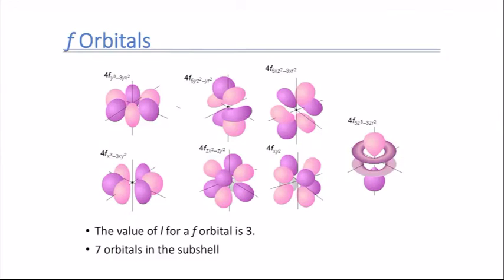F orbitals have L=3, which means there are seven different orbitals in that subshell. As L increases, the wave functions become more complex. F orbitals have six or eight lobes depending on which one you're looking at, and one of them still resembles a p orbital — but now with two donuts.